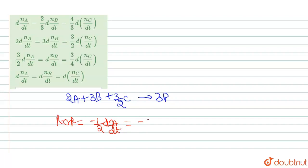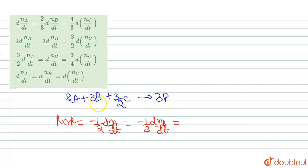For species B, it is also a reactant, so we apply a negative sign. B has a coefficient of 3, so we divide by 3: rate = -1/3 × d[B]/dt.